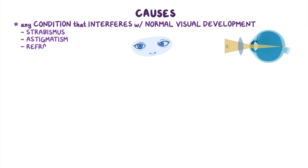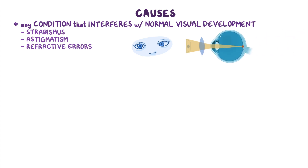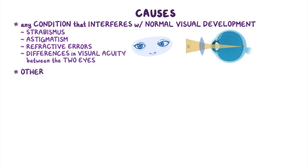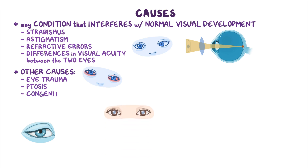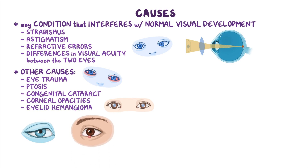Other causes include refractive errors like near or farsightedness and differences in visual acuity between the two eyes, as well as eye trauma, ptosis (drooping of the upper eyelid), congenital cataract (clouding of the lens), corneal opacities, and eyelid hemangioma.